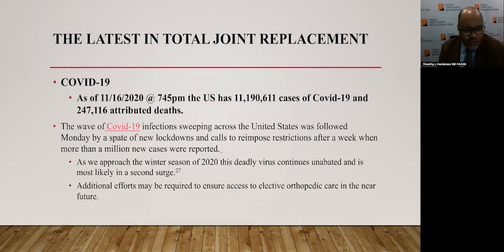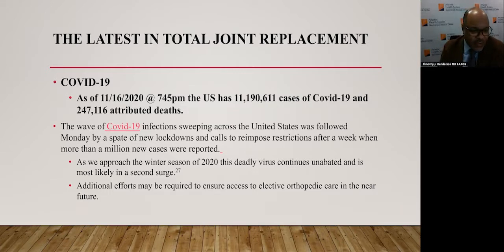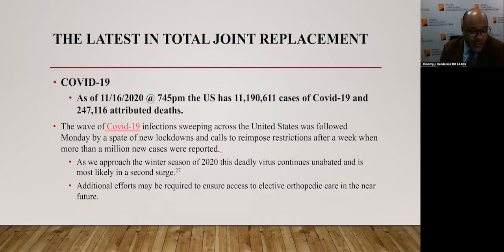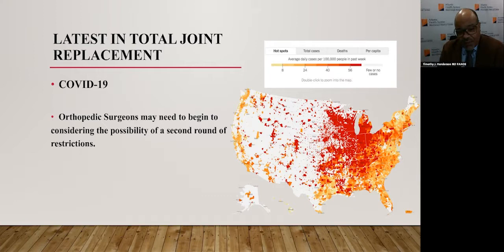The next latest trend in total joint replacement — I'd be negligent if I didn't mention COVID-19. When I was creating this talk on November 16, 2020, at 7:45 PM, we had over 11 million cases of COVID-19 and almost 250,000 attributed deaths. The wave of COVID-19 infections sweeping across the United States was followed by a spate of new lockdowns after a week when more than a million new cases were reported. As we approach the winter season of 2020, this deadly virus continues unabated and is most likely in a second surge. Additional efforts may be required to ensure access to elective orthopedic care in the near future. Here's a map of COVID average daily cases per 100,000 people in the past week — showing red areas spreading as the disease would.